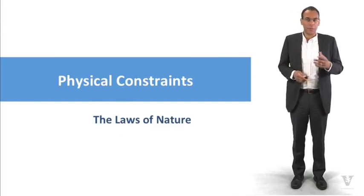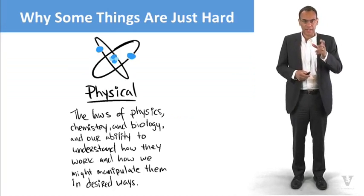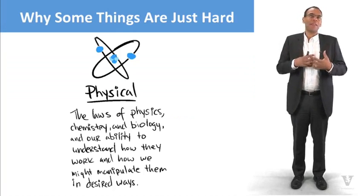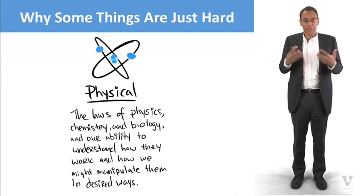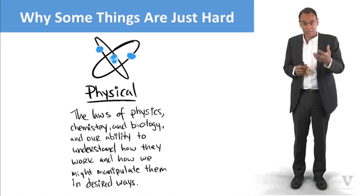Physical constraints are these laws of nature that we're going to talk about. This is the first set of constraints. I think of this as why are some things hard? Well, some things are just hard because of the physics of it, maybe the biology of it.